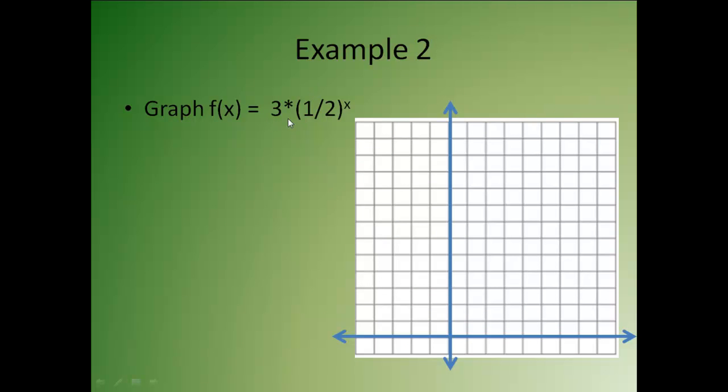Here's the second example. Again, I'm going to do a table of values, my x, y chart. And here, you have to realize the 3 is not attached to the exponent part. So you are going to do 1 half to the x first, then multiply it by 3. So I'm going to start out with my negative 3, negative 2, negative 1, 0, 1, 2, and 3.